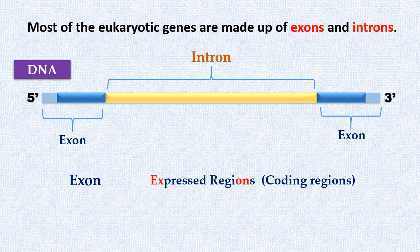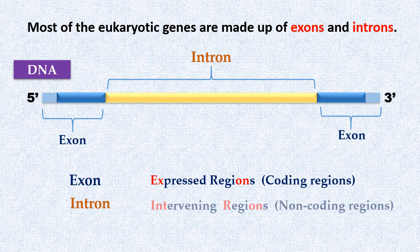But coding regions or exons of eukaryotic genes are interrupted by non-coding regions. These non-coding regions are known as introns. Introns stand for intervening region.